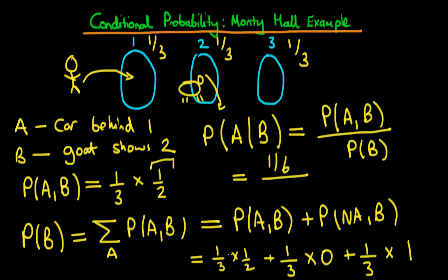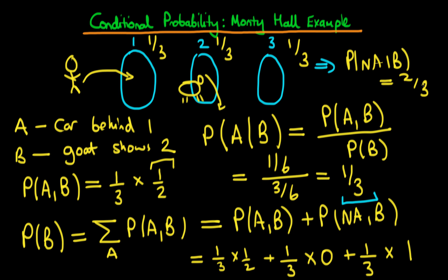We find the counterintuitive result that P(A|B) — the probability the car is behind door one given the host opened door two — is one sixth divided by one half, which equals one third. That means P(not A | B) is two thirds. So given that the host has opened one of the doors, we are twice as likely to win the car if we switch our choice rather than stick with our original one. We've arrived at this counterintuitive result using conditional probability.